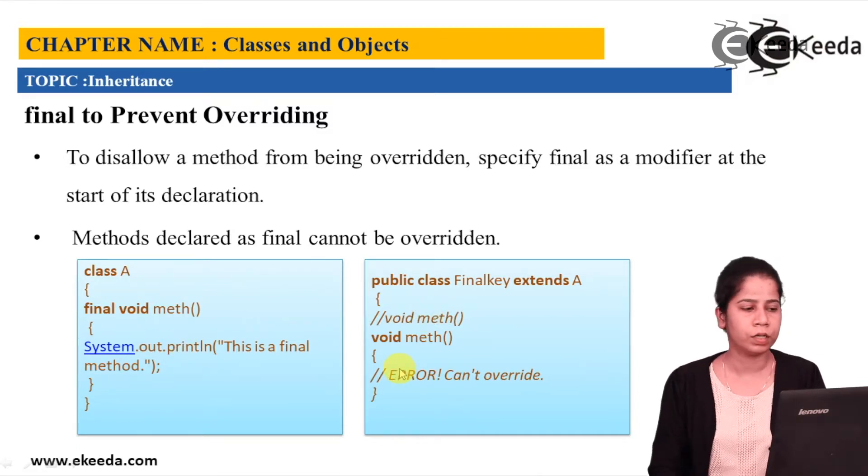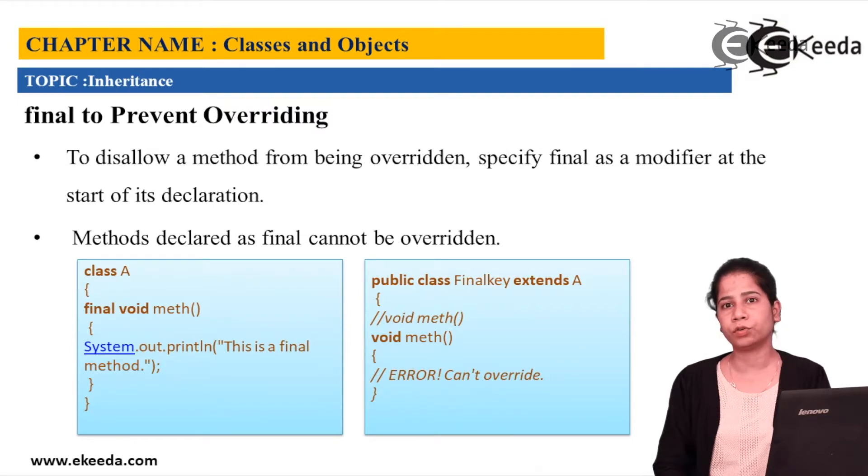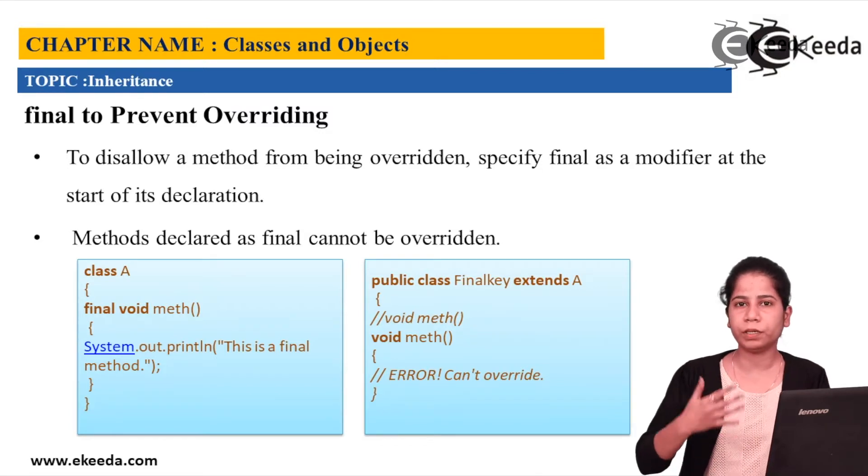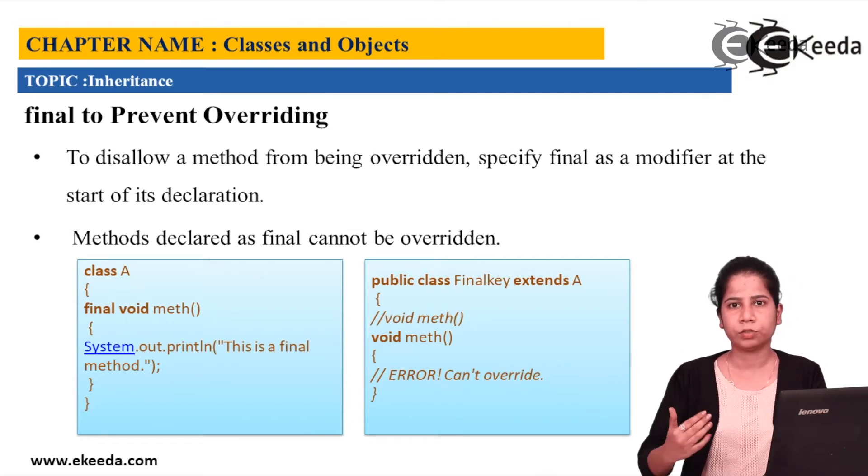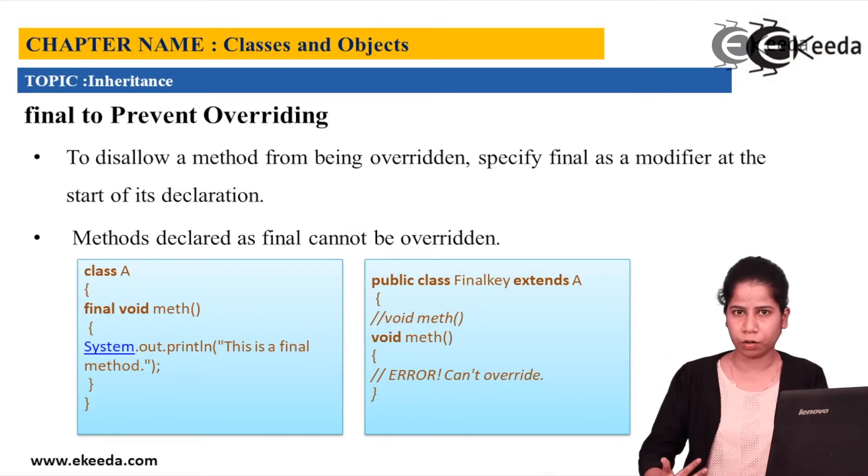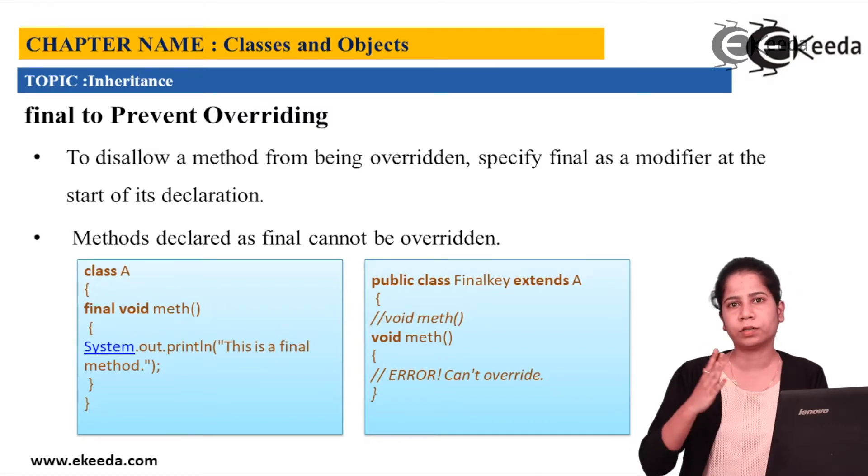So that is the second use of your method overriding. So if you want to avoid any particular method not to be overridden, then you can inherit it. You can be able to call it by using object of the child, but you cannot override it.